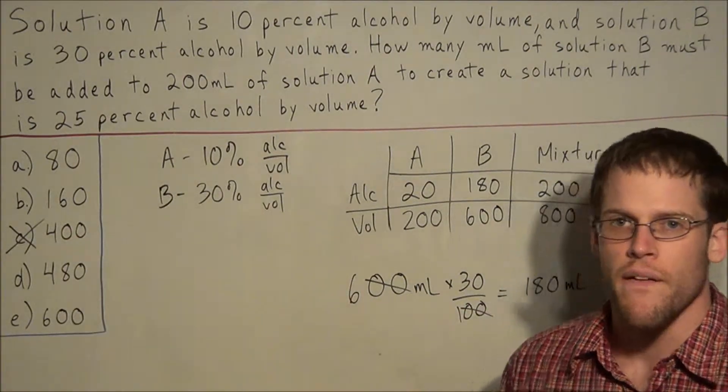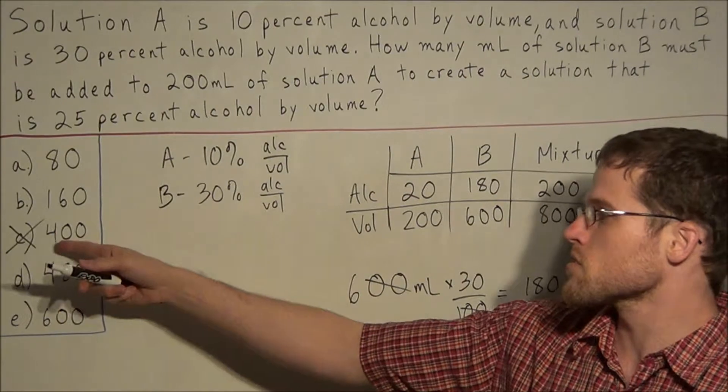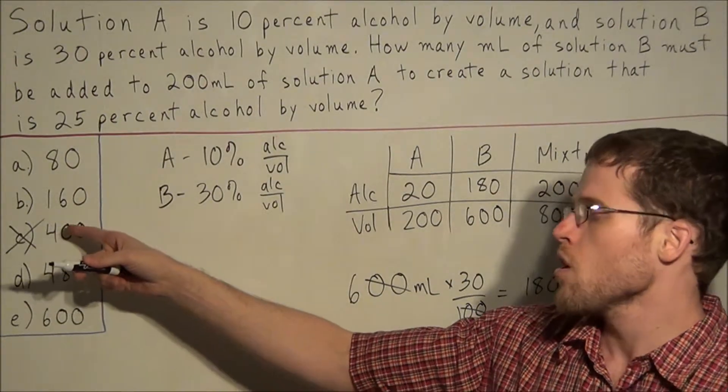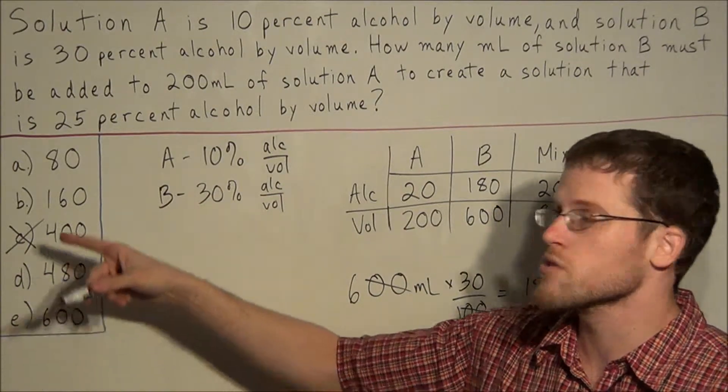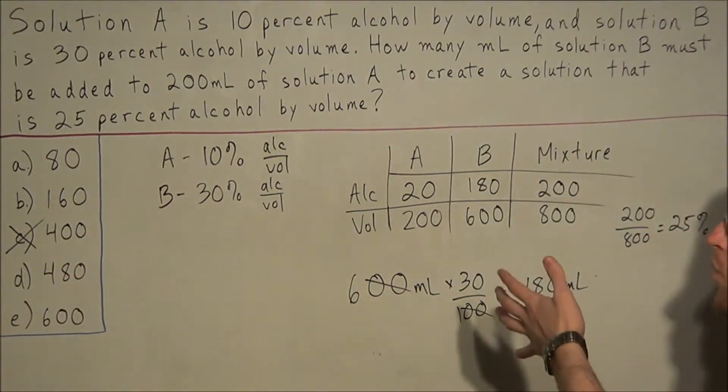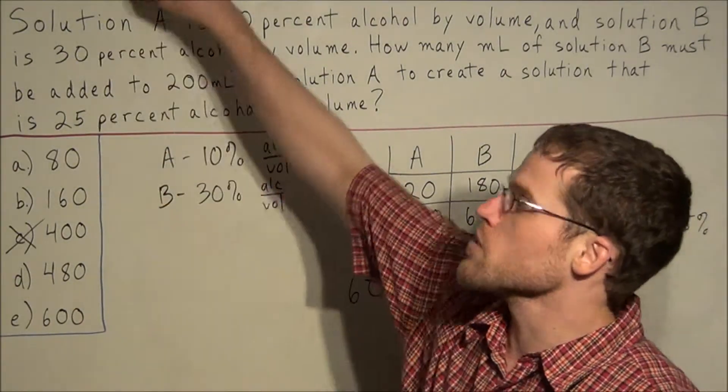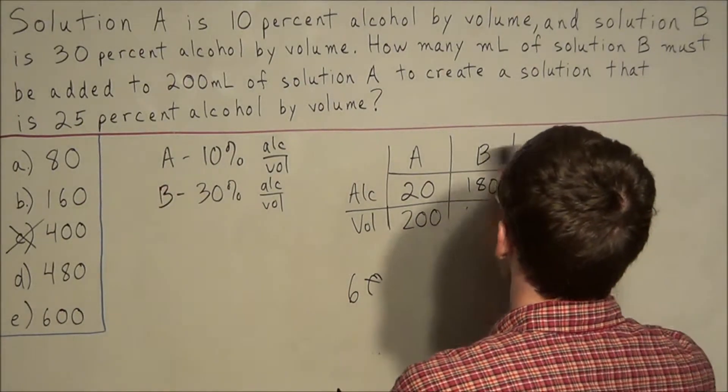So 200 over 800 equals 25%, which is exactly what we were looking for. So for a problem like this, we tried out C and we got a percent that was too small. So this is one thing that may help. Since this percent would have been too small, we would have known to try out the bigger answer choices. That is, 600 is bigger than 400, so we could move in this direction. But as you can see, it was slightly time consuming.